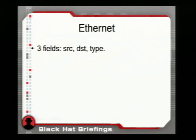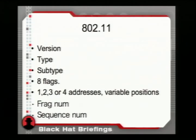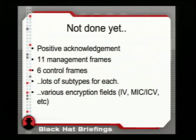For a quick comparison: Ethernet has three fields — source, destination, and type. 802.11 has a version, a type, a subtype, eight flags, one to four addresses in different spots, a fragment number, a sequence number — and that's just the header. Beyond that you've got positive acknowledgement, 11 management frames, six control frames, lots of subtypes for each, and as soon as you turn on encryption it adds more fields like initialization vectors.